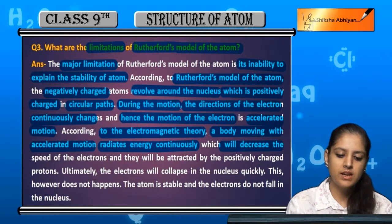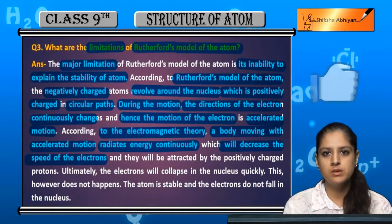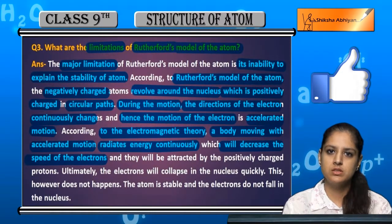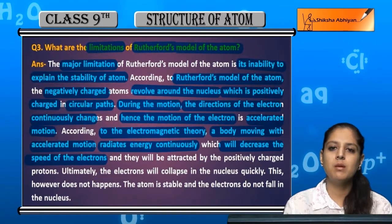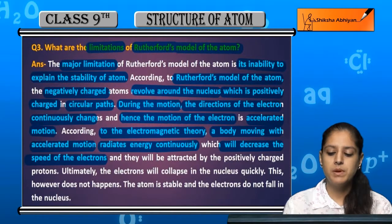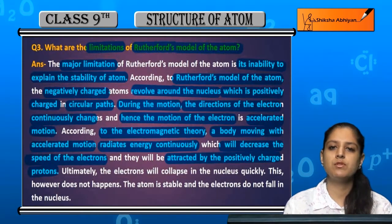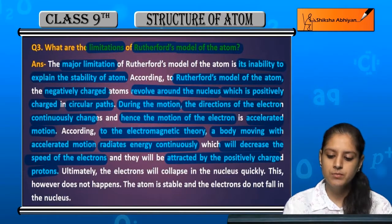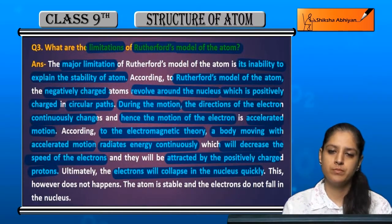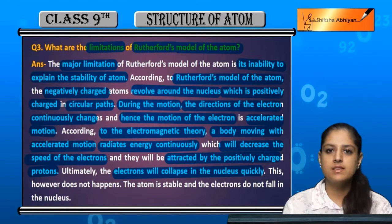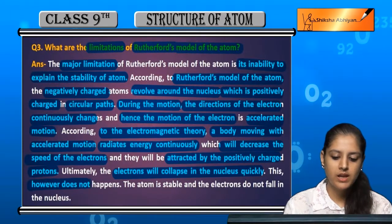Because of that energy loss, the speed of the electron is reduced slowly. When the speed of the electron is reduced, it will be attracted towards the nucleus. So because of this, the atom should be unstable — but that doesn't happen.